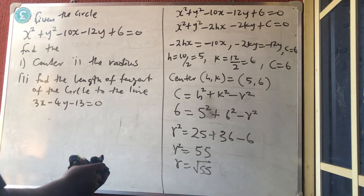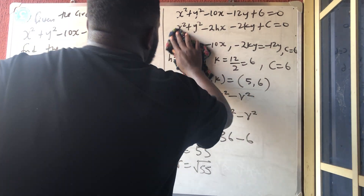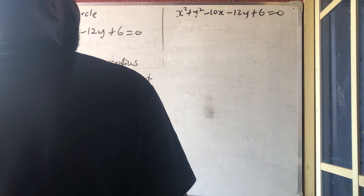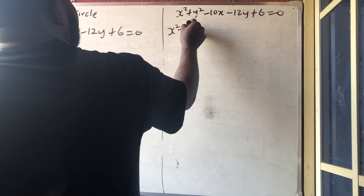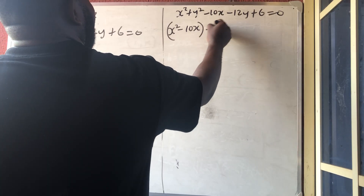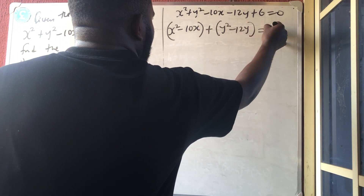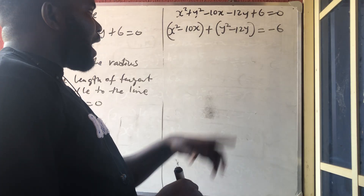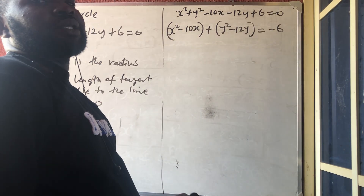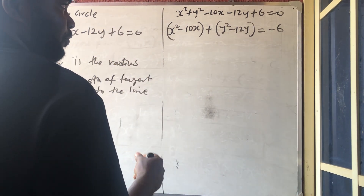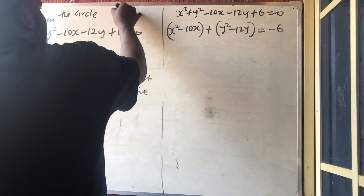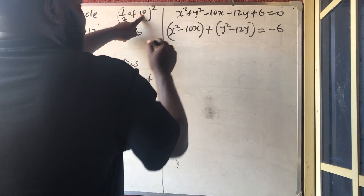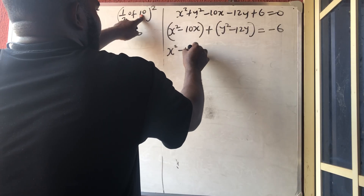Now let's solve using the completing the square method. Rewrite as: x squared minus 10x plus y squared minus 12y equals negative 6. Find half the coefficient of x, square it, and add to both sides. Half of 10 is 5, so add 5 squared. Then half of 12 is 6, so add 6 squared to both sides: x squared minus 10x plus 5 squared, plus y squared minus 12y plus 6 squared, equals negative 6 plus 25 plus 36.